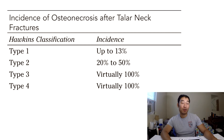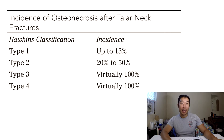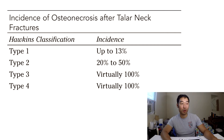In Type three, all three arteries are essentially interrupted — including the remaining blood supply from the posterior tibial and peroneal arteries — and the incidence of avascular necrosis reaches 91 to 100 percent per the original Hawkins article. Connelly and Kelly later added a fourth stage: Type two is dislocated at the subtalar joint, Type three at the tibiotalar (ankle) joint, and Type four at the talonavicular joint, where AVN incidence is virtually 100 percent.